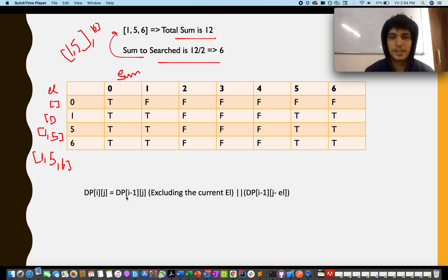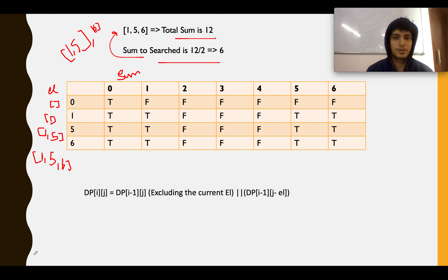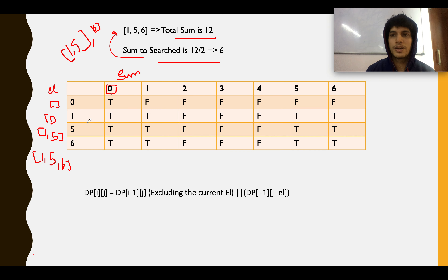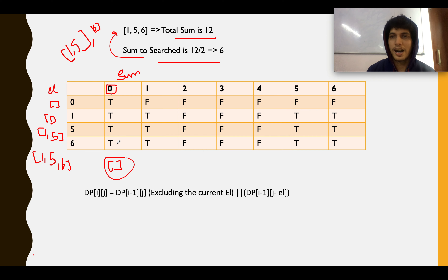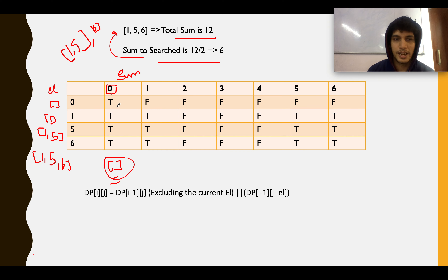At every point, you consider two cases: exclude the current element and include the current element. If either case generates the target sum, update dp[i][j] to true. The corner case: a sum of zero can always be generated using an empty subset. Therefore, the first column of the DP array is always set to true — there's always an empty subset.